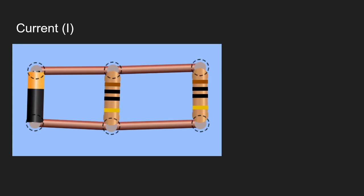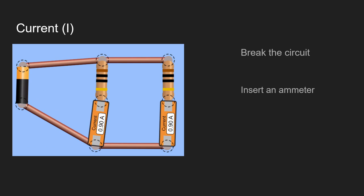Next we will move on to current which is abbreviated with an I. Here we have the same circuit. The first thing we have to do is break the circuit. Secondly we place in our ammeter which will give you a current readout.